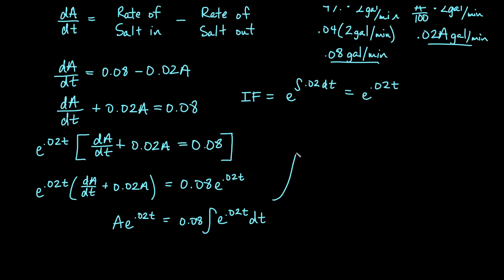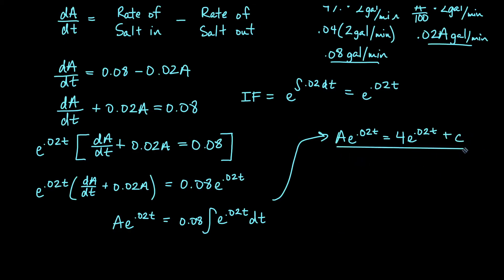Taking the antiderivative with respect to t, since the left side is a product rule of A and the integrating factor, we get A times e to the 0.02t. On the right side, we have 0.08 times the integral of e to the 0.02t dt. Integrating, we get A times e to the 0.02t equals — the reciprocal of 0.02 comes out, so 0.08 divided by 0.02 gives us 4 — so we get 4 times e to the 0.02t plus some constant C. Dividing everything by e to the 0.02t, we get A equals 4 plus C times e to the negative 0.02t. This is our general solution.